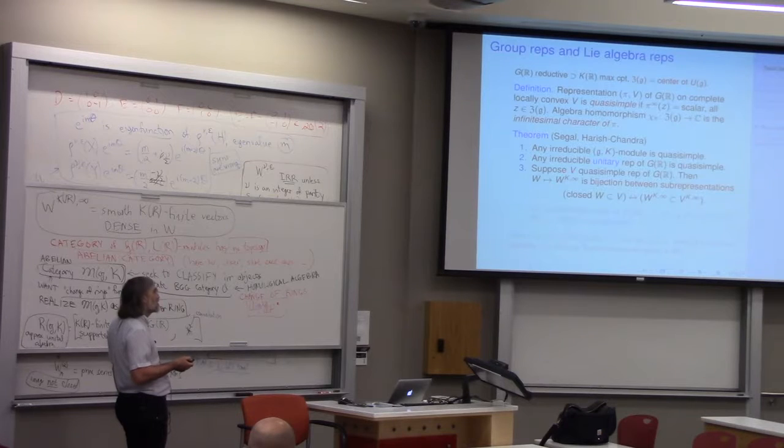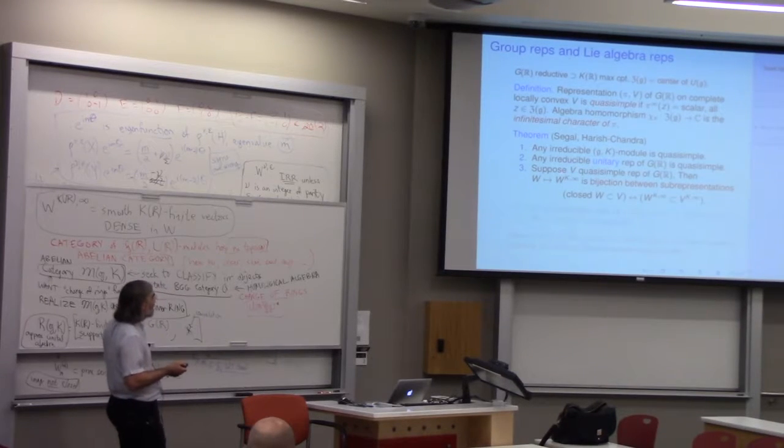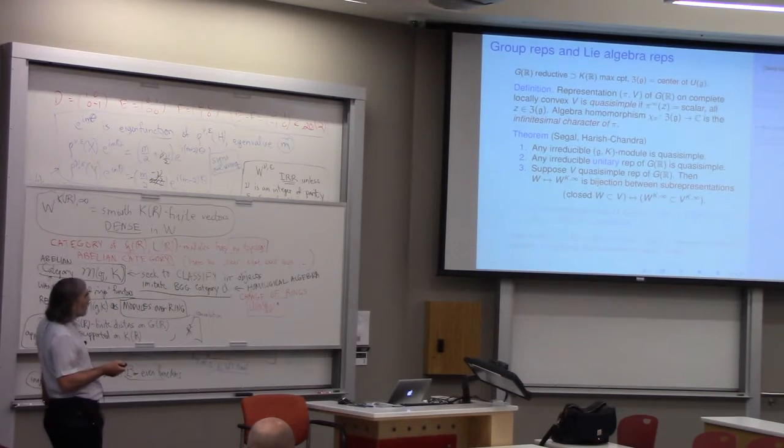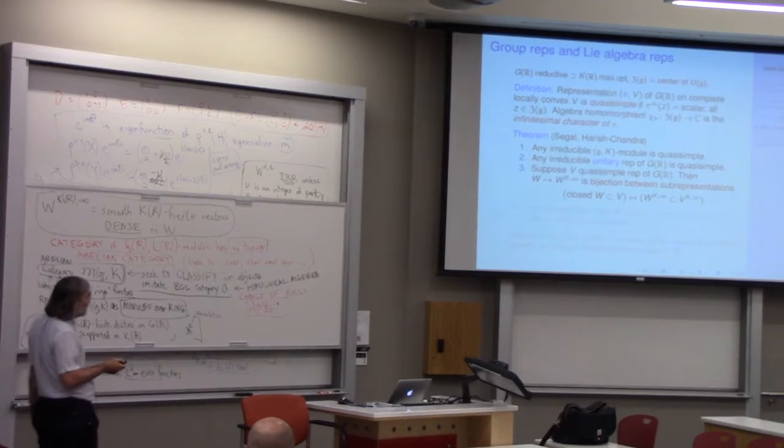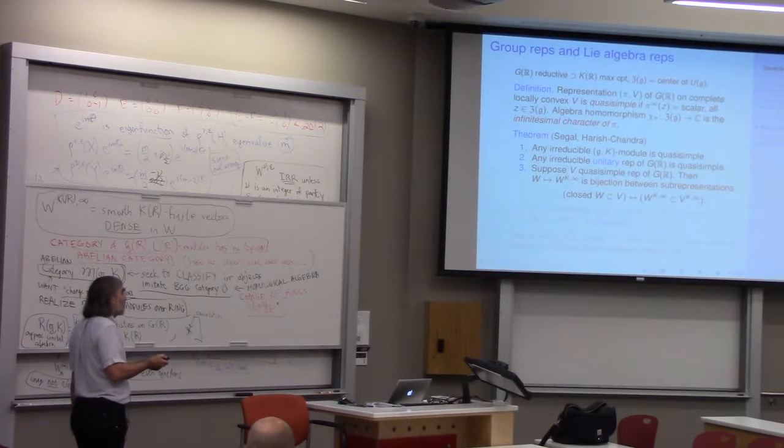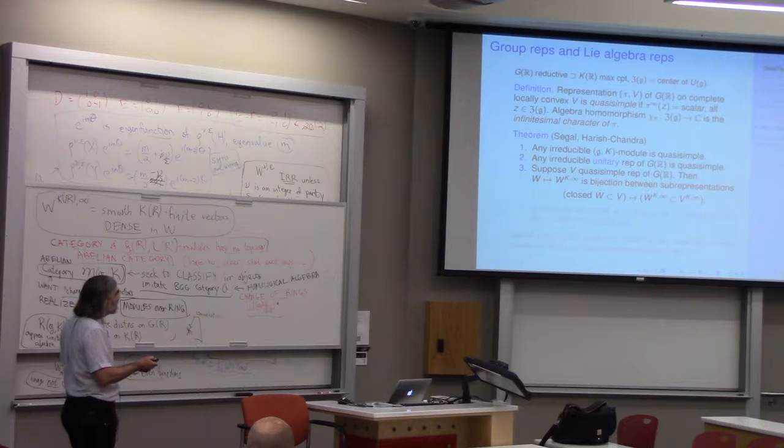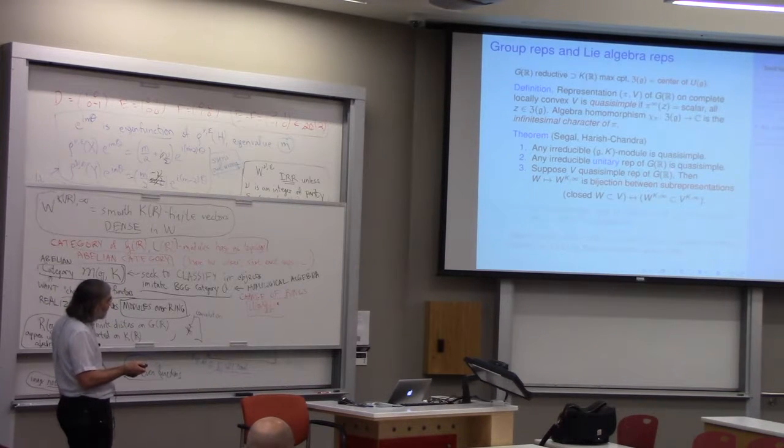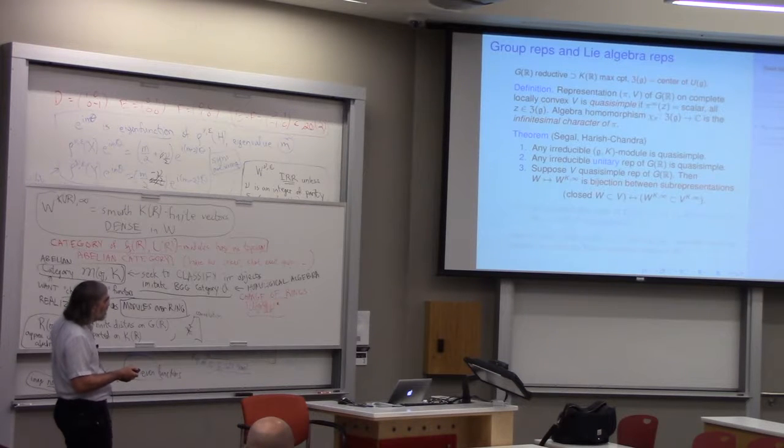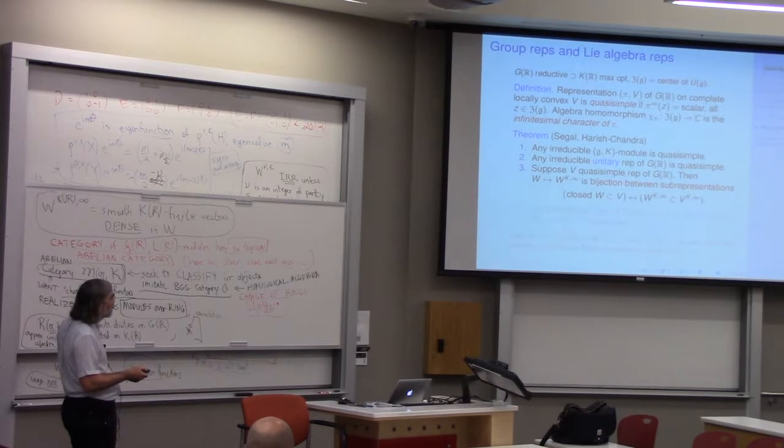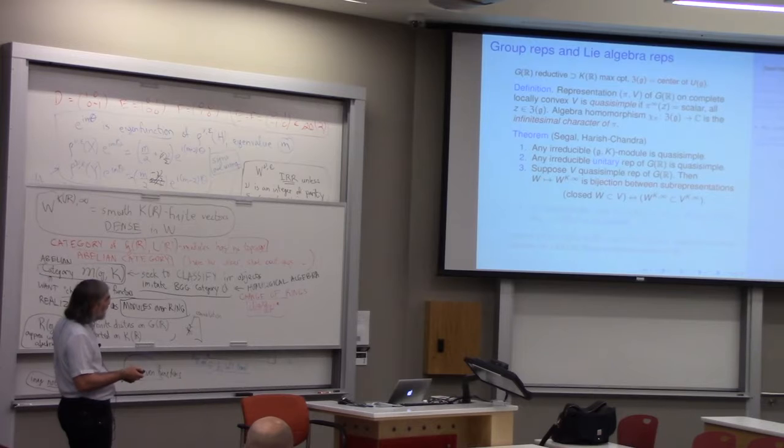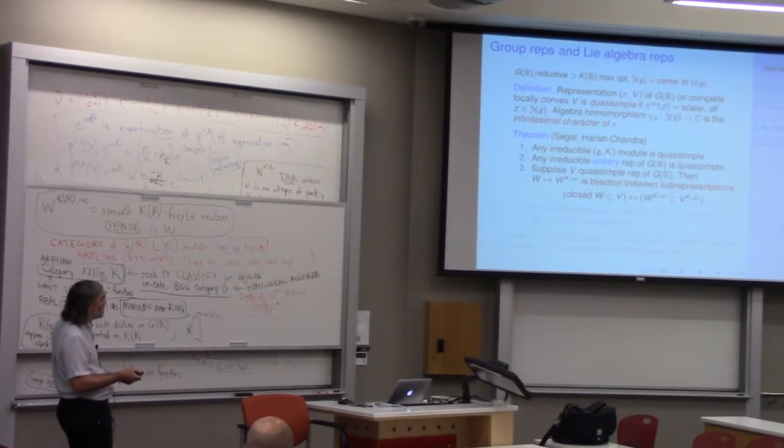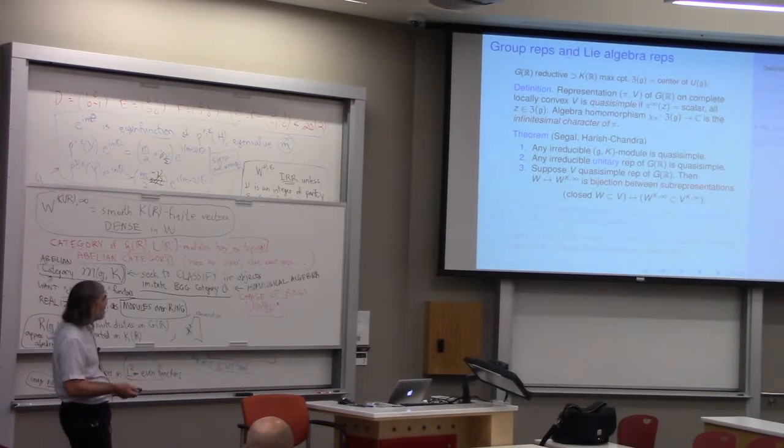If you have a quasi-simple group representation... V is the group representation. Then taking K-finite vectors makes a bijection between closed invariant subspaces of V and GK submodules of V K-infinity.